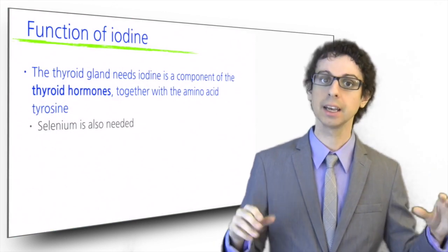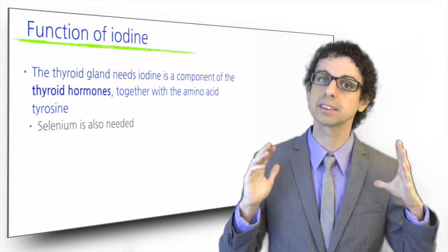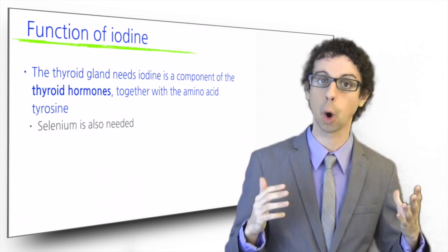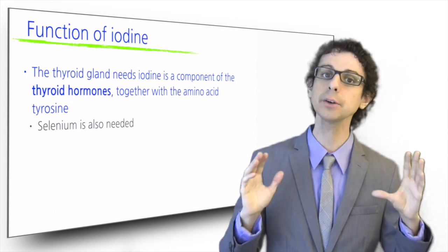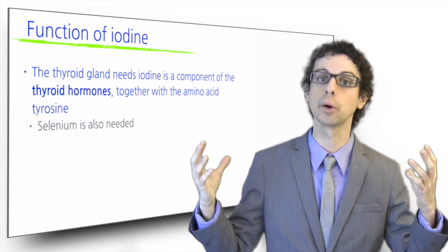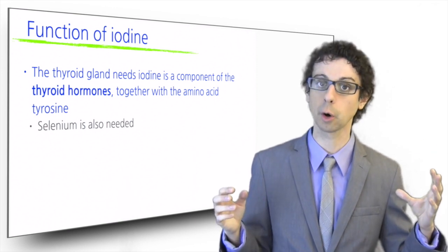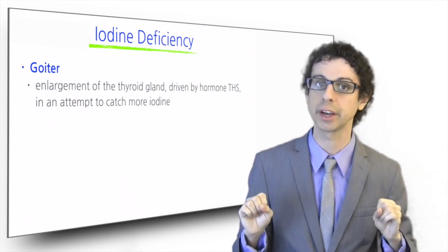Today we know that one of the main tasks of the thyroid gland is to trap iodine from the bloodstream because iodine is an essential component of the thyroid hormones together with amino acid tyrosine. If iodine is deficient, the thyroid gland will enlarge more and more driven by the pituitary hormone TSH in a desperate attempt to catch more iodine.